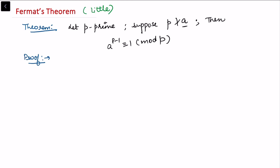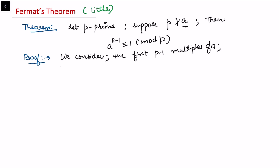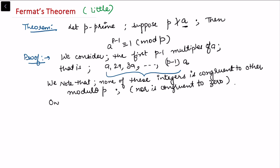For the proof, let us consider the multiples of the integer a. We consider the first p minus 1 multiples of a: that is a, 2a, 3a, up till (p-1)a. We then observe that none of these integers are congruent to each other modulo p.